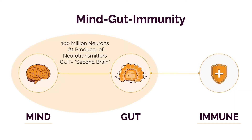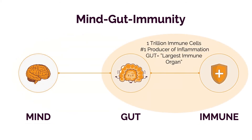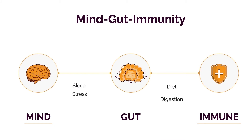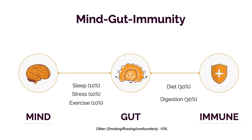The gut contains 100 million neurons and is the largest producer of neurotransmitters in the body — that's why it's earned the nickname 'the second brain.' It's also host to one trillion immune cells, which means a majority of your immune system is actually housed in the gut. If I had to assign percentages, diet is roughly a third and digestion is roughly a third. Combined they represent more than half the impact, because most of your immune system is in your gut, and most of your genetic diversity is in your gut in the form of microbes.